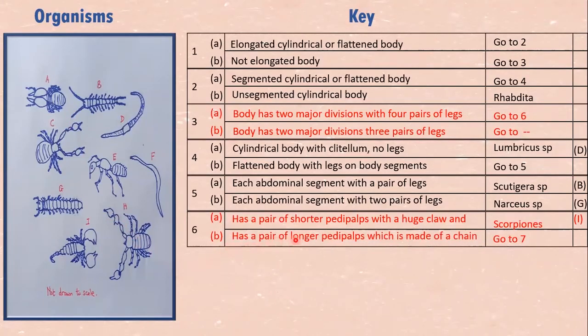So we put them together to go to seven because at seven, we have to sort them out. We need to use another characteristic of the two, this one and this one to sort the two out.